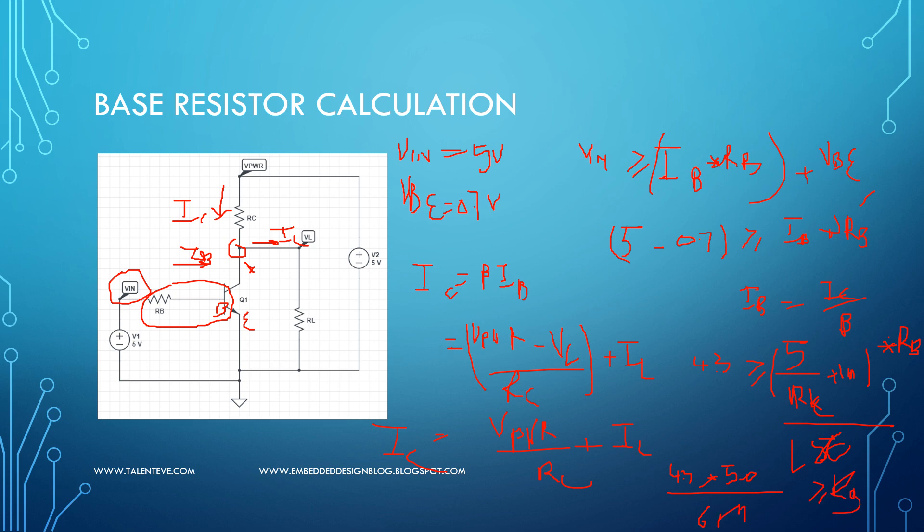So now one thing which you can see here, when we calculated the IC, it was completely dependent on the load. And when we wanted to calculate the base resistor, it was depending on how much the collector resistor was, collector current was required. So that is how we know IC is equal to beta IB.